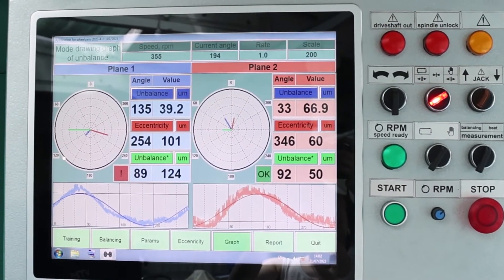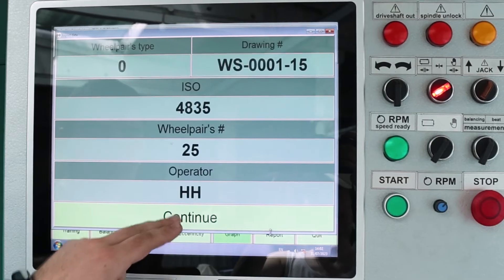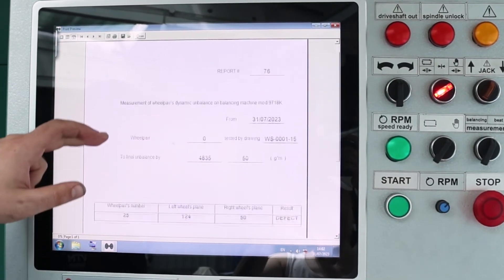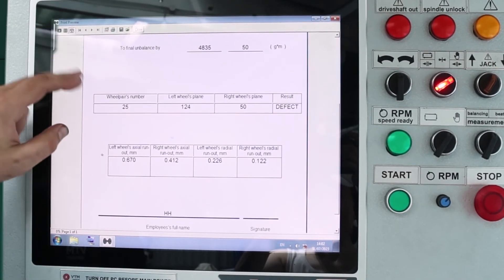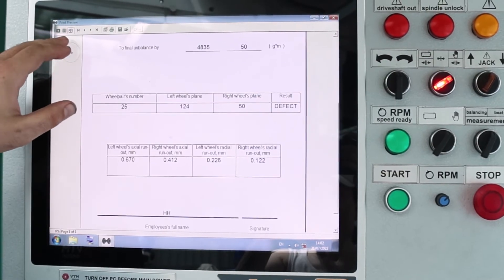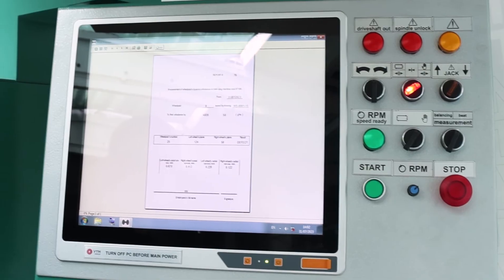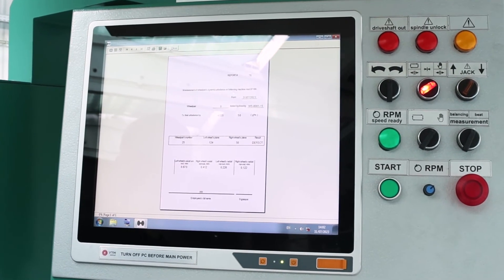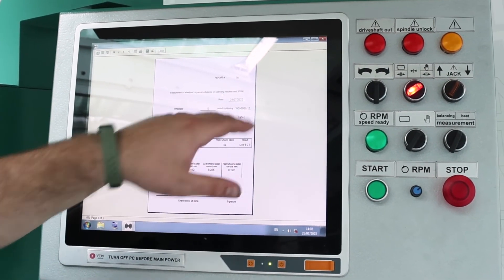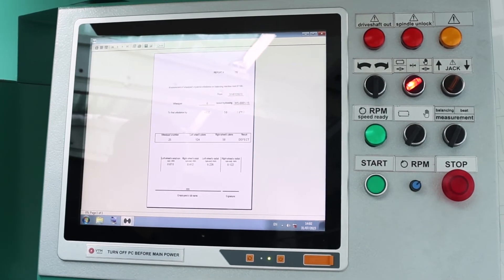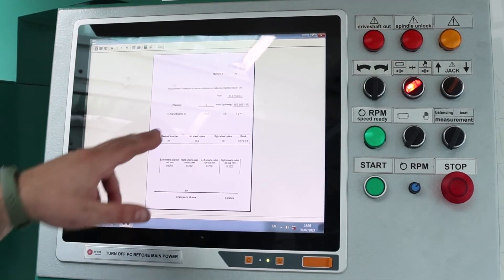And the next step is to generate a report. On the report we see the number of this reference, the selected number of the wheelset, the name according to the drawing, the tolerance, the results of the imbalance and the results of the run-out on each of the planes.